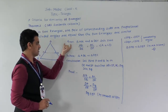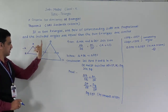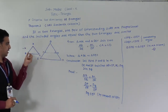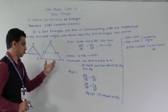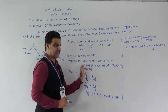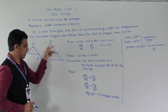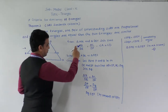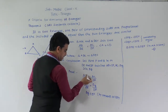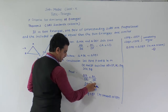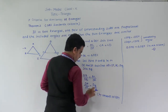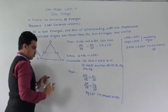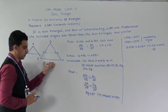The construction is the same: take points P and Q on DE and DF such that AB equals DP and AC equals DQ, then join PQ. From the given AB by DE equals AC by DF, replacing AB with DP and AC with DQ, we get DP by DE equals DQ by DF. By the Converse of BPT, PQ is parallel to EF.